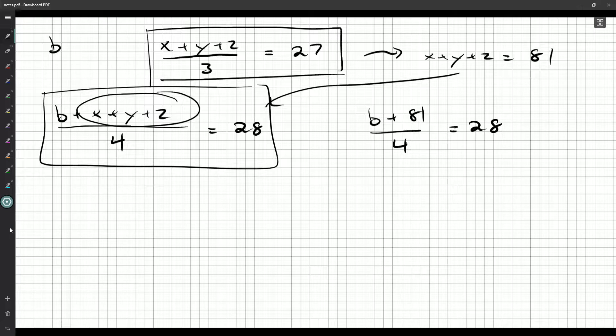And now just rearrange to 4 times 28, which is 112. And that's subtract 81. And we get that Barry's age is 31. So Barry is 31 years old.